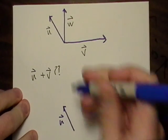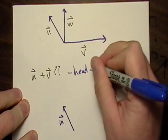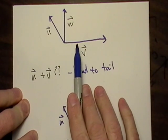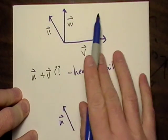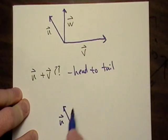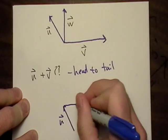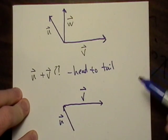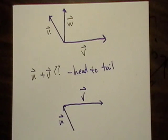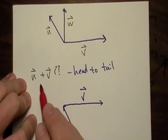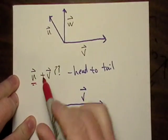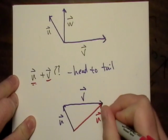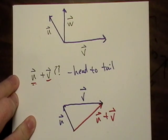We want to add v to it. Remember, we go head to tail when we assemble these things, so we just pick up v and stick it up here. Here's the head of u, so I'm going to stick vector v right there. To complete this, I go from the tail of my first vector to the head of my second one — I just connect them. And there's u plus v.